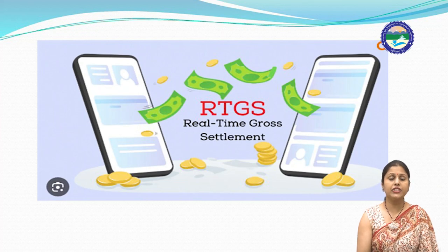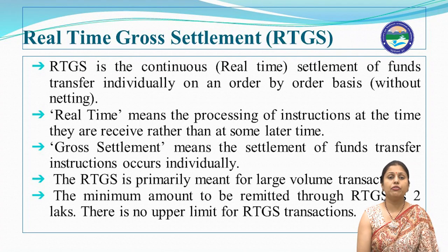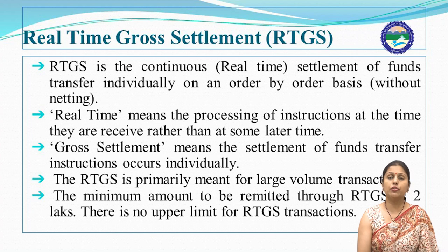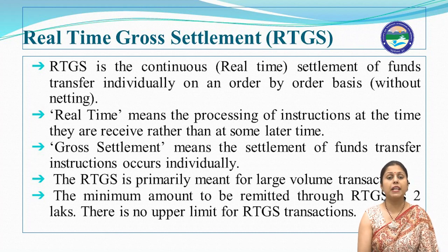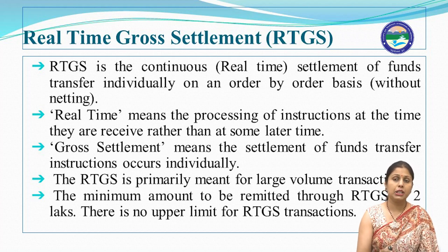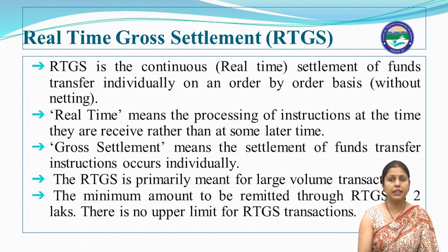RTGS stands for Real-Time Gross Settlement. It is the continuous settlement of funds transferred individually on an order-by-order basis. Real-time means the processing of instructions at the time they are received. Gross settlement means the settlement of fund transfer instructions occurs individually. RTGS is primarily meant for large-volume transactions. The minimum amount to be remitted through RTGS is ₹2 lakhs, and there is no upper limit for RTGS transactions.